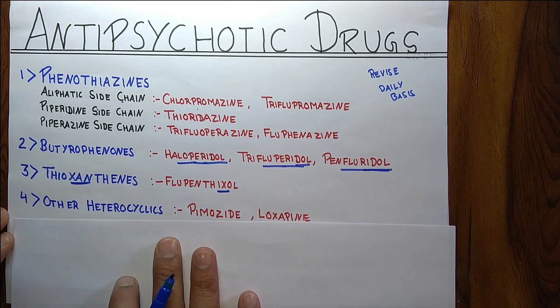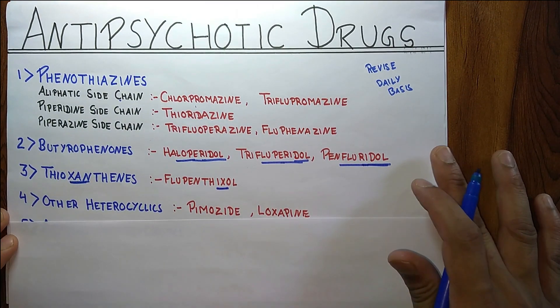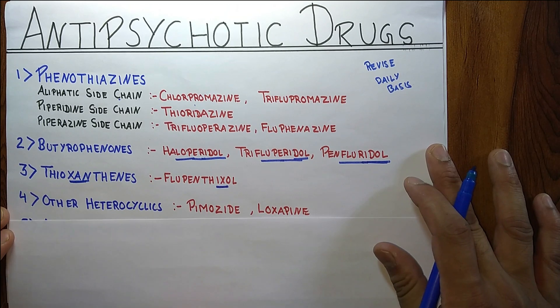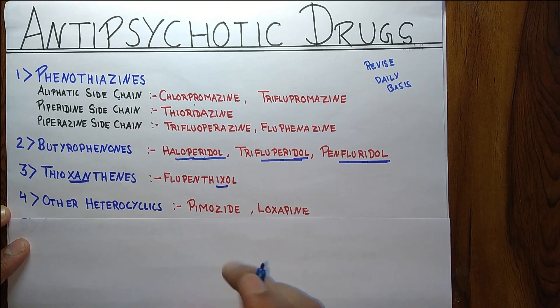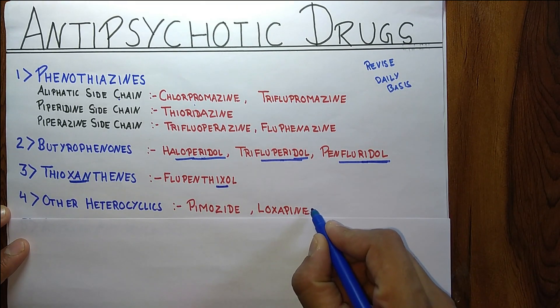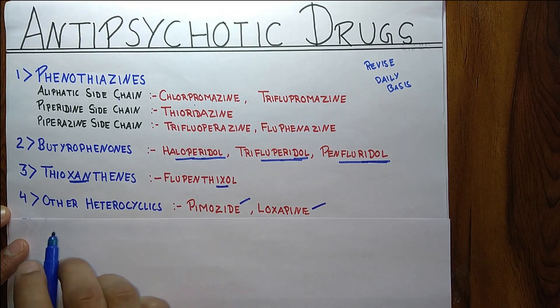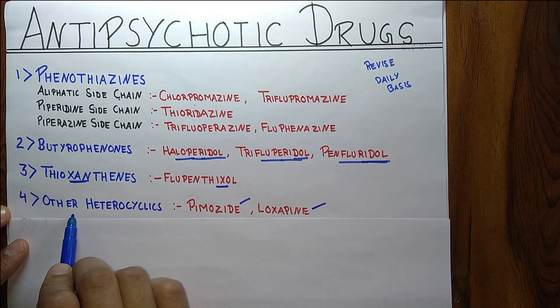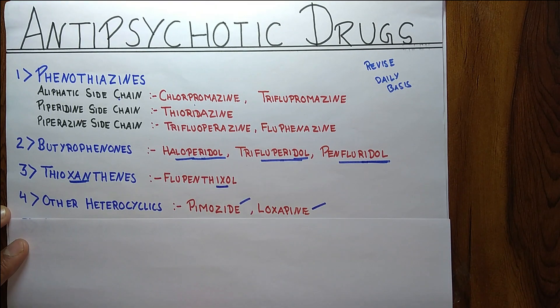Next one is Other Heterocyclics. There are two drugs in this category: Pimozide and Loxapine. Just try to learn these calmly.